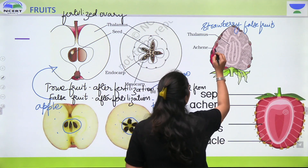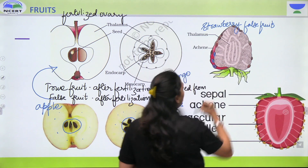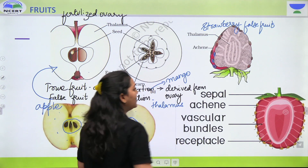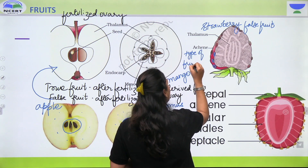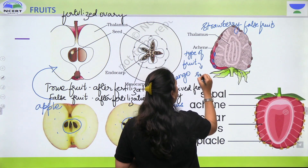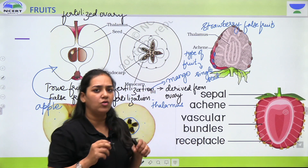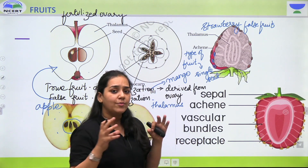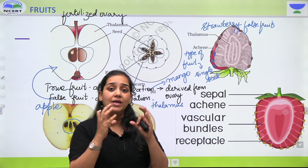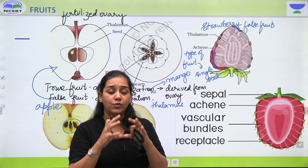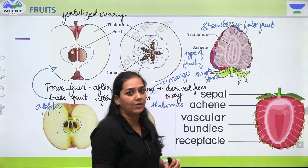Kabhi yellowish in colour. Isko hum bulaate hai achene. Yeh jo portion hai — achene ek tarike ka fruit hai, it is a type of fruit aur jiske paas normally ek single seed rahega. Toh aap strawberry ke upar bohot sare achenes ko dekho ge. So strawberry jo hai woh ek single fruit nahi hai, but it is a group of fruits — aggregate of achenes. Hum usko bulaate hai aggregate of achenes.